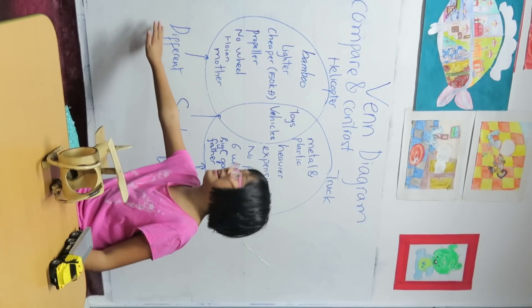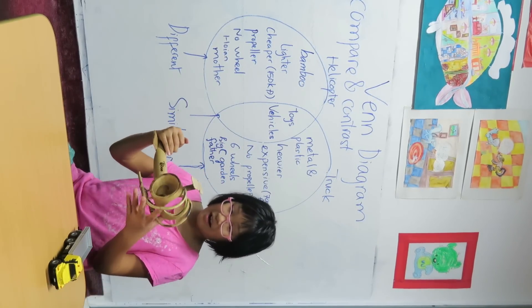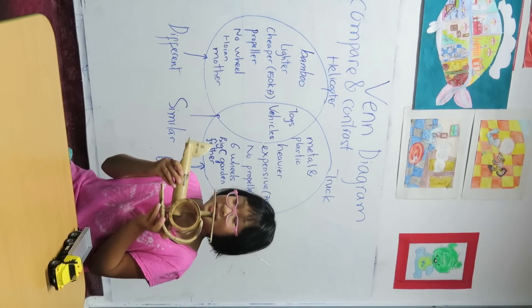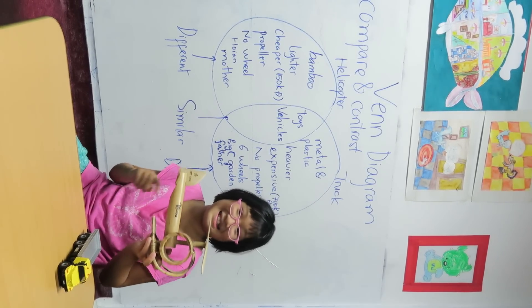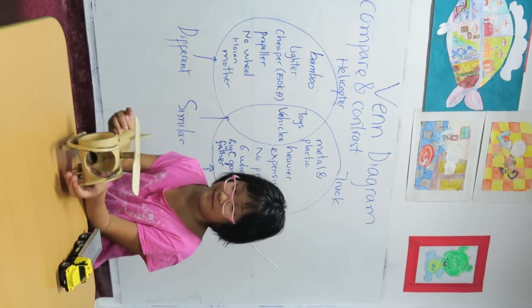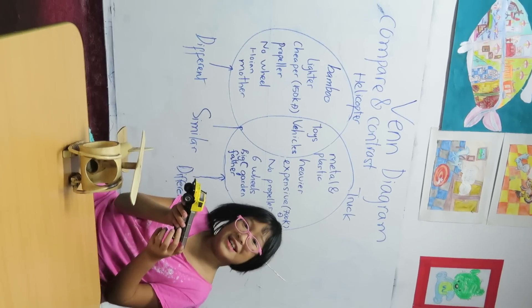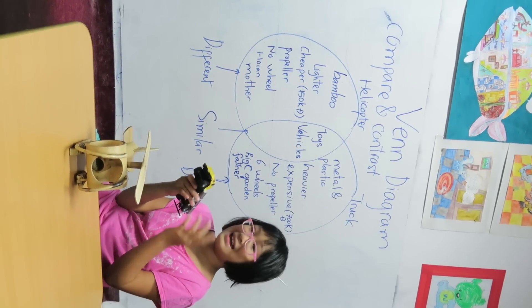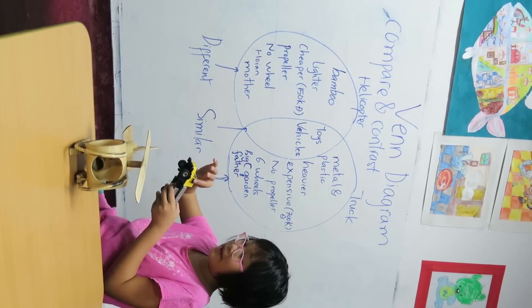Now, let's see the differences. Alright, can you guess what this is made of? Yes, that's right. It is made out of bamboo. And what about this truck? It's made out of metal and plastic.